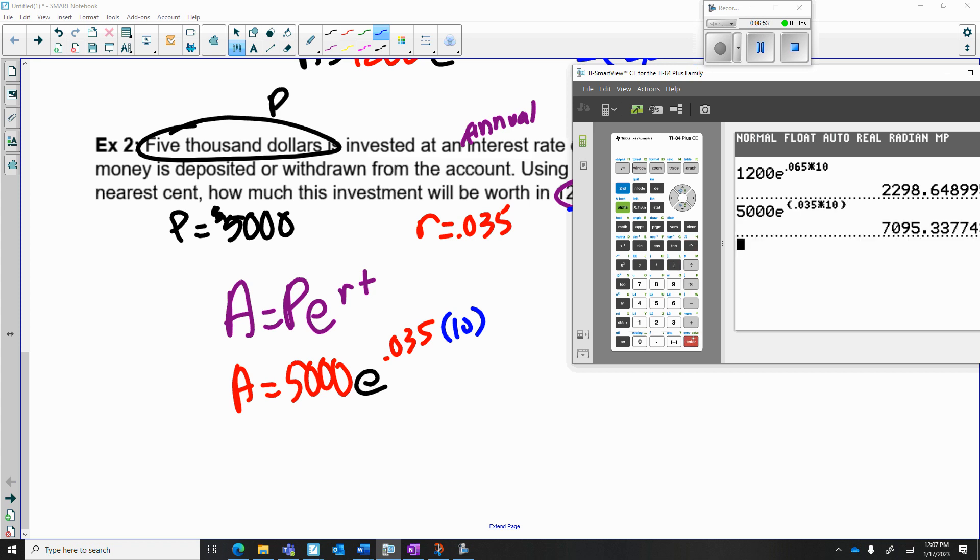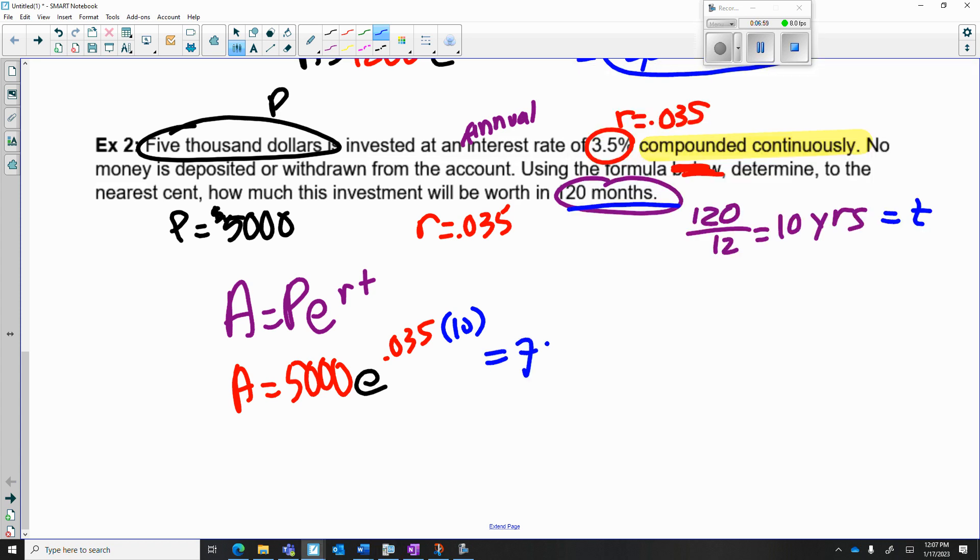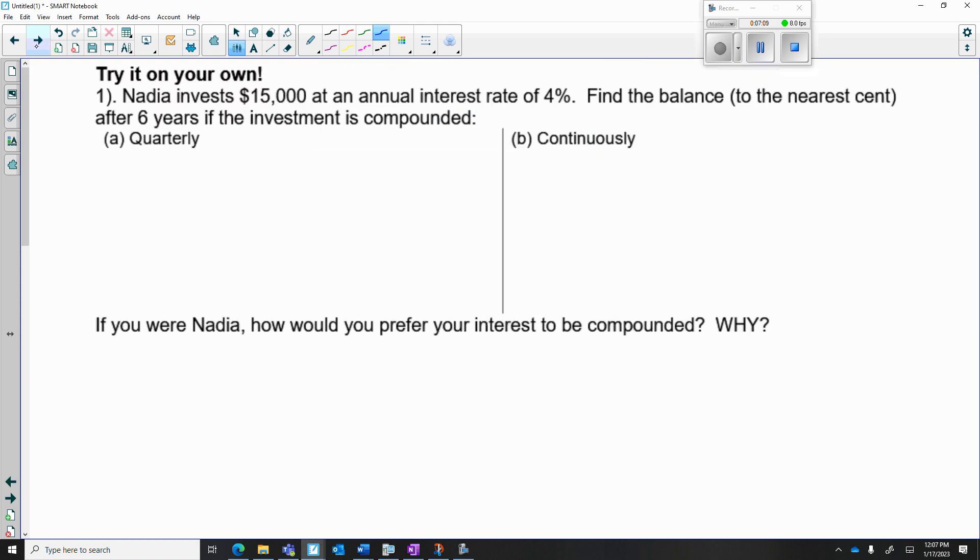I got my answer, I'm going to round to the nearest cent: $7095.34. That's a lot more money made. Now if you look at the next page, it says try these on your own. Notice now it's going to combine the skills we learned yesterday with the ones today. It's going to ask you to do the interest rate compounded quarterly, so that's n = 4, so you're going to use the formula from yesterday, (1 + r/n)^nt. Then it says compounded continuously, so you're going to use the PERT formula from today.